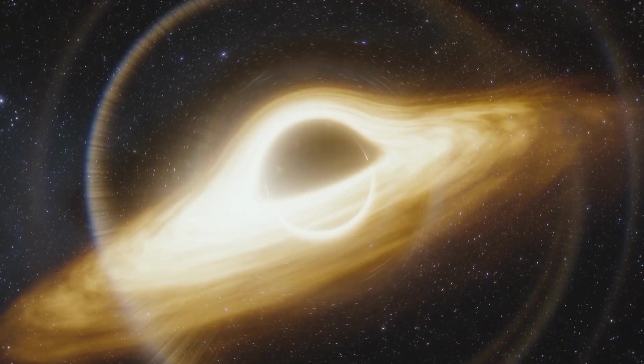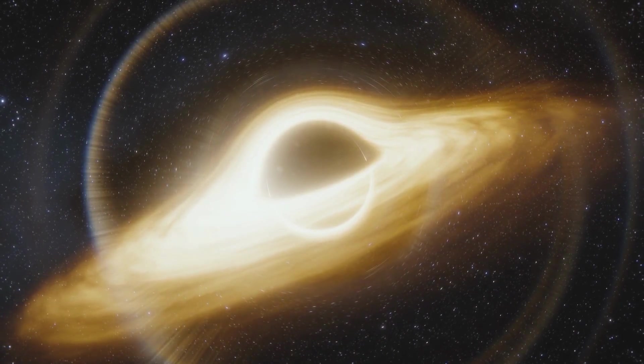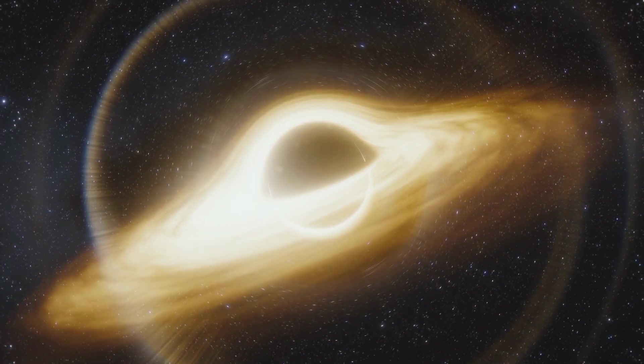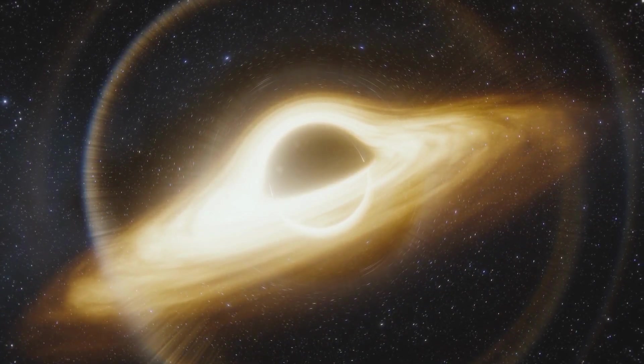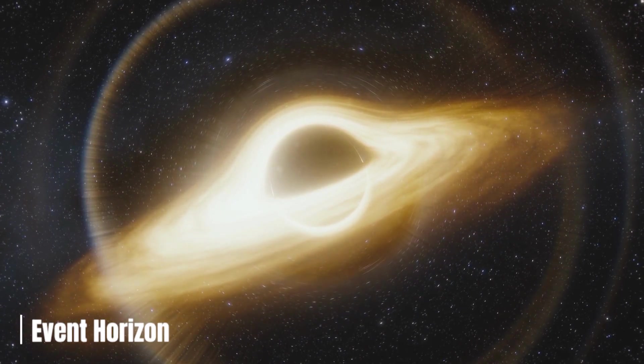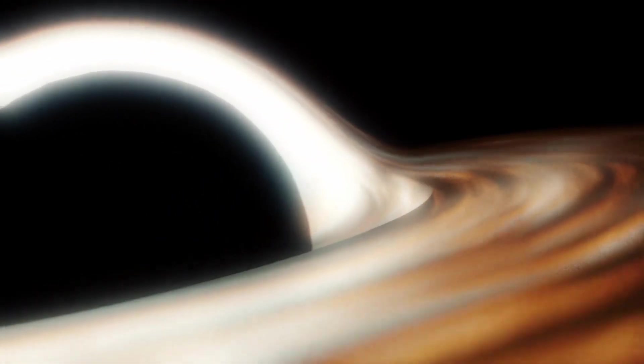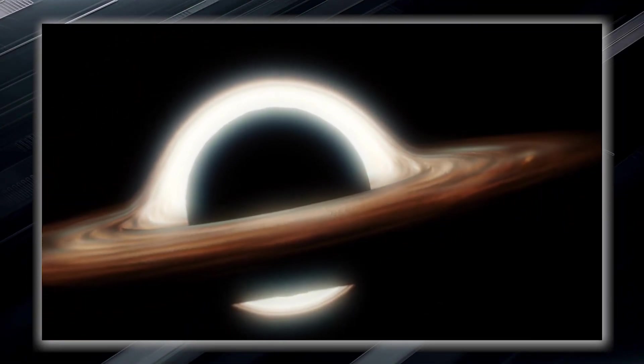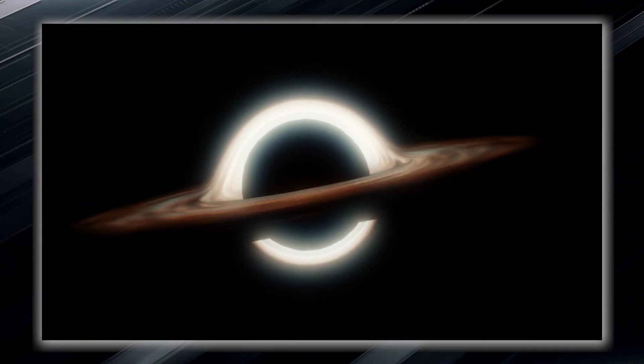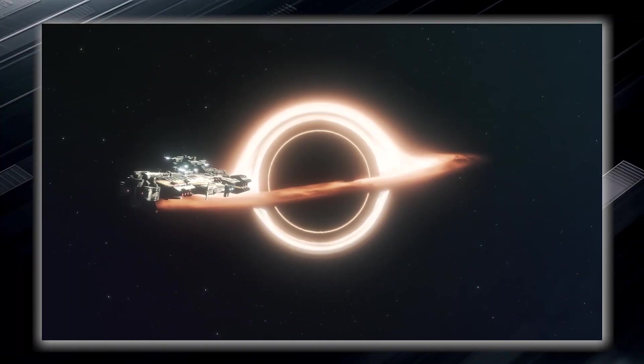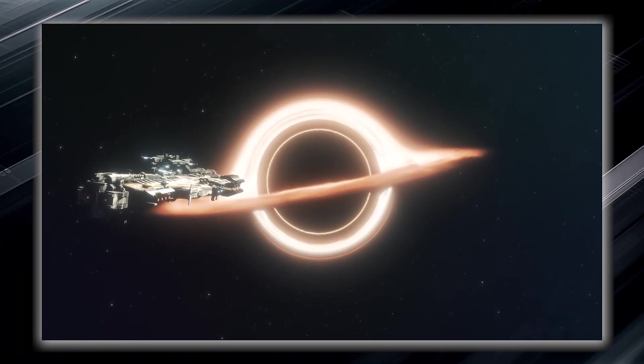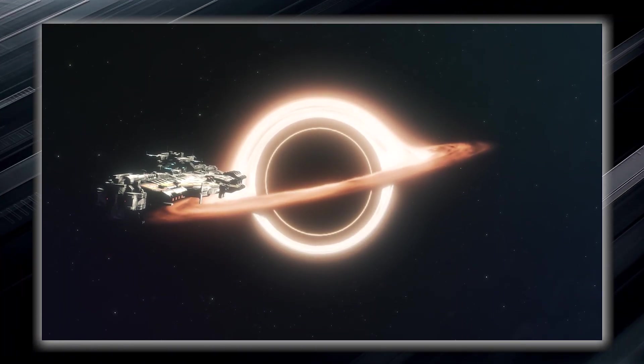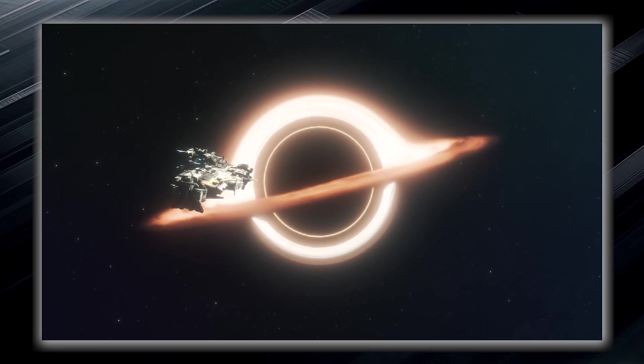This is where things become truly extraordinary. The gravitational pull near a black hole is so incredibly strong that it creates what is known as an event horizon. The event horizon is not a physical barrier, but rather a region where space gradually bends. It is an invisible boundary or point of no return. Once something, such as an unfortunate spacecraft or even light, crosses its boundary, it can never escape the clutches of the black hole.